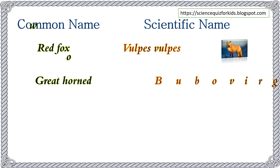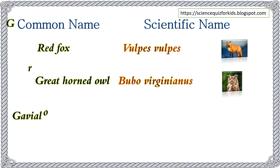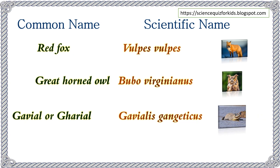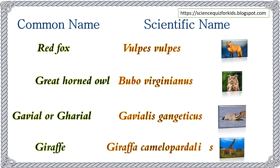Green Horned Owl — scientific name Bubo virginianus. Gharial — scientific name Gavialis gangeticus. Giraffe — scientific name Giraffa camelopardalis.